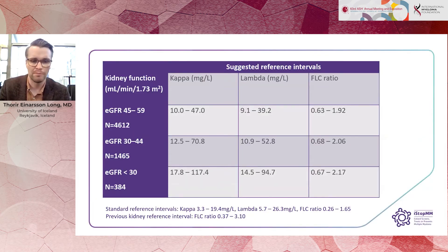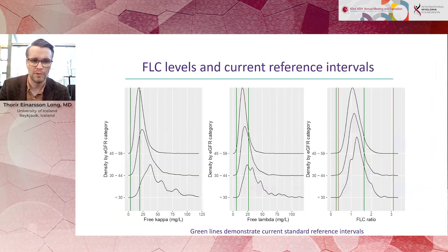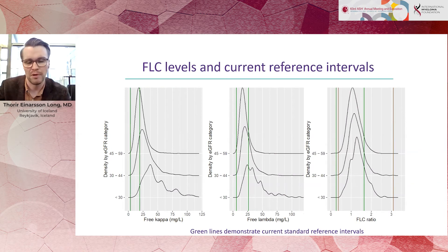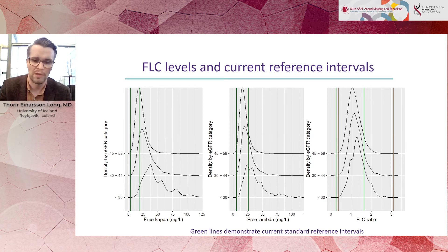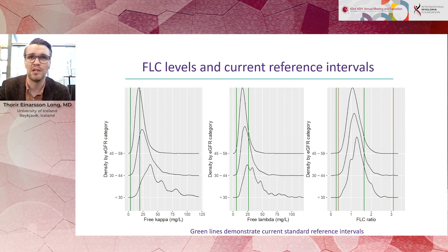All of the free light chains — both kappa and lambda — and the FLC ratio increased with decreasing kidney function, as expected.